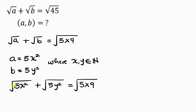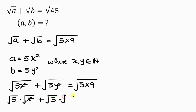This expression is the same as the square root of 5 times the square root of x², plus the square root of 5 times the square root of y², equal to the square root of 5 times the square root of 9.